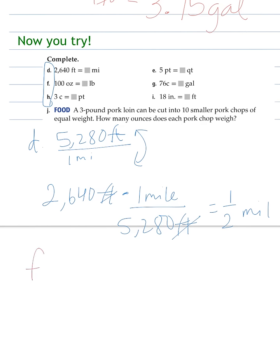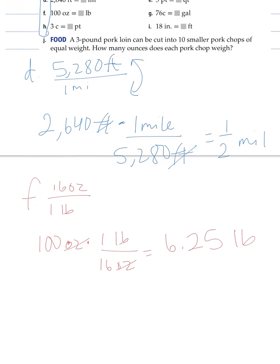Next one, F. 100 ounces equals blank pounds. So let's start with there are 16 ounces per one pound. That's my unit ratio. So now I take my 100 ounces, and I multiply by the reciprocal of that, one pound over 16 ounces. Ounces cancel. 100 divided by 16 equals 6.25 pounds, or 6 and 1/4.